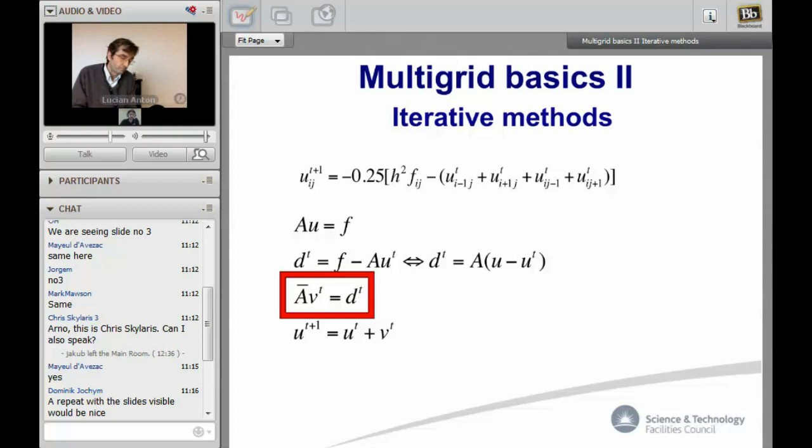Here's a very quick summary about iterative methods and their problems. The basic iterative method is Jacobi where you start with an approximate solution and you iterate. You get the new value at every point. In more formal terms, you have a linear equation Au equals f. What one does is look at the defect which is f minus Au for a given approximation.